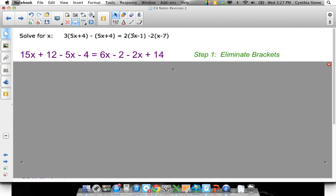Over here, I distribute the 2 through. So 2 times 3x is 6x, 2 times negative 1 is negative 2. Distribute the minus 2 through. So minus 2 times x is minus 2x, minus 2 times minus 7 is plus 14. First step.